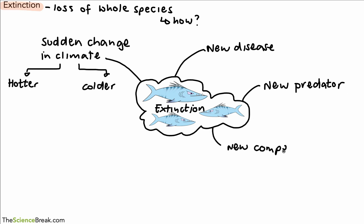We could also have new competitors. If another species of fish comes into the area and is better at competing for the same kinds of food, they might become extinct.